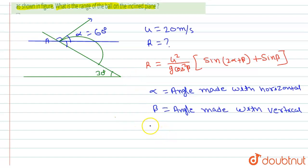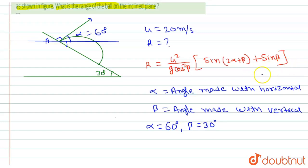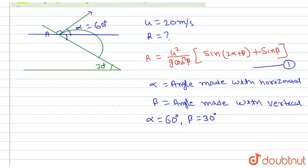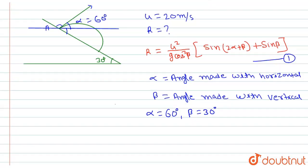So alpha is equal to 60 degrees and beta is equal to 30 degrees. Now, from this equation — let us call this the first equation — from the first equation we can find the range.